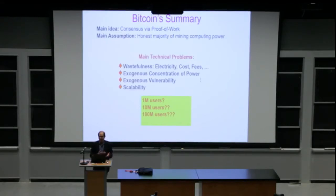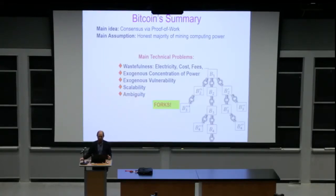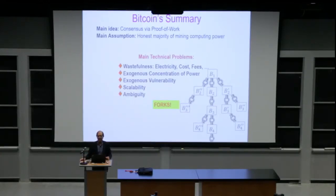The other problem is scalability. Just a few talks ago we saw: does it scale? We need it to scale — one million users, ten million, a hundred million — how many can we really support? The other issue is forks. Forks mean ambiguity, because some blocks disappear and it becomes a little bit unclear.